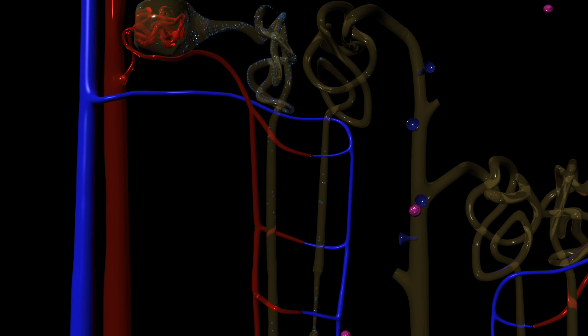One of these points is the collecting duct, where the vasopressin receptor can be found.